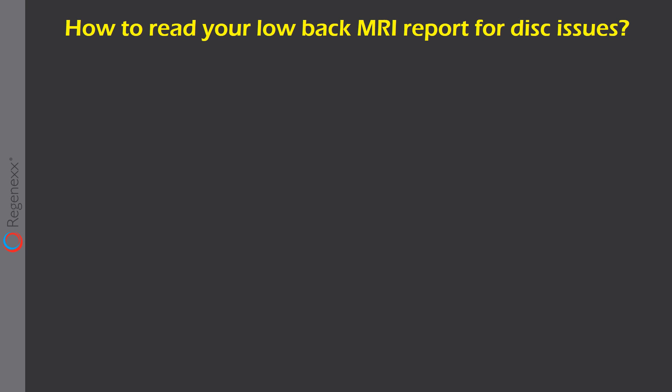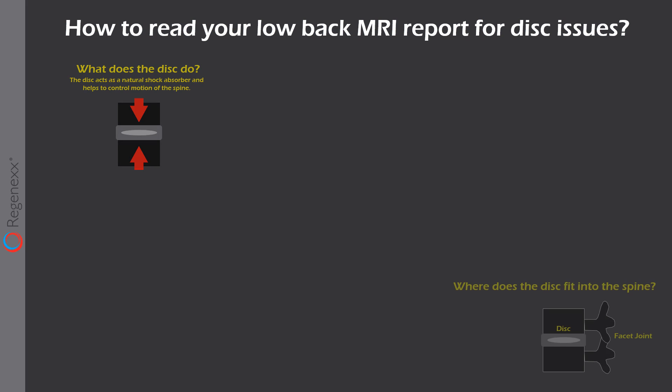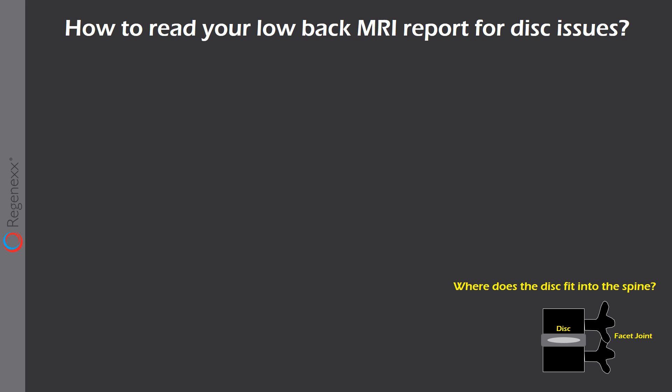Hi, this is Dr. Centeno, and today we're going to talk about how to read your low back MRI report for disc issues. The disc basically acts as a shock absorber that lives between the spine bones. It's got a tough outer covering and kind of an inside gel called the nucleus pulposus. It fits into the spine living in the front of the spine, whereas the facet joints live in the back of the spine.